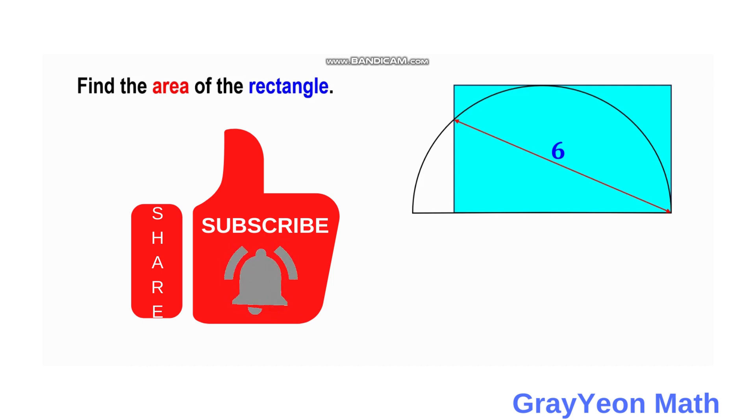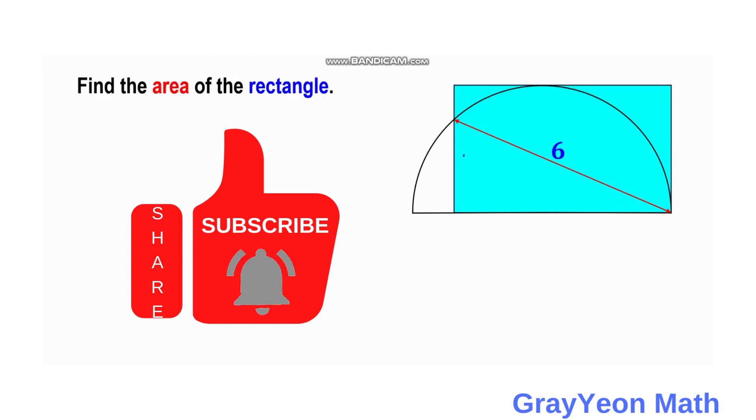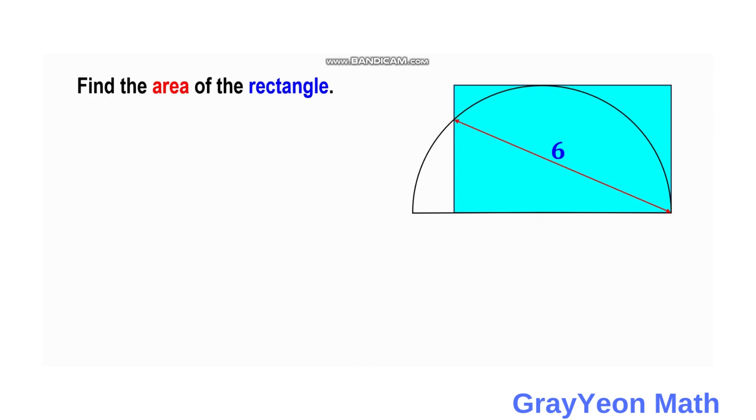Welcome to GrayonMath. To solve this problem, we have a semi-circle and a rectangle that overlap with each other. The semi-circle and rectangle intersect at a point, and their vertices also intersect. The distance from that point is six units, and we are required to find the area of the rectangle.